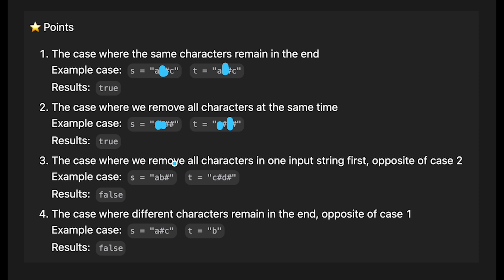Case three is the opposite of case two — we remove all characters in one string first. For example 'ab#' and 'cd##': we remove b from s, then for t we find a hash deleting d, find another hash deleting c. Now s has 'a' and t is empty — there's a difference, so we return false. Case four is where different characters remain in the end — for example 'a#c' and 'b': we compare c and b, they are different, so we return false.